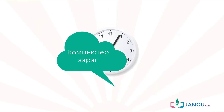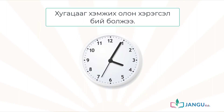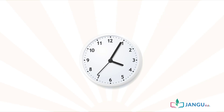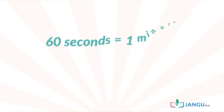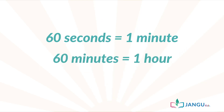We usually start counting time using seconds. We count seconds like this: one, two, three, four, and so on. It's easy to count seconds. But did you know, when you count up to 60 seconds, it becomes a minute? Yes, 60 seconds make one minute. And 60 minutes make one hour.